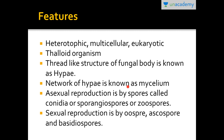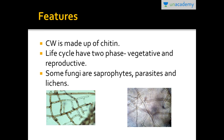Their body structure is a thallus-like structure, meaning it is not differentiated into root, stem, or leaf. They mainly consist of threads called hyphae, and the network of these hyphae is known as mycelium. They reproduce asexually by spores known as conidia, sporangiospores, or zoospores, and sexually by oospores, ascospores, and basidiospores.